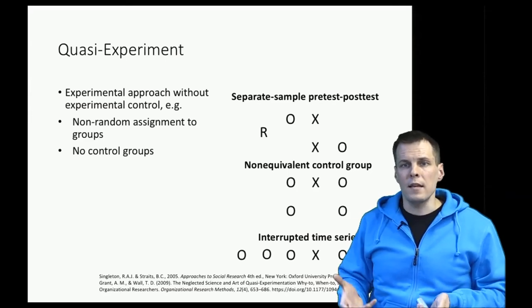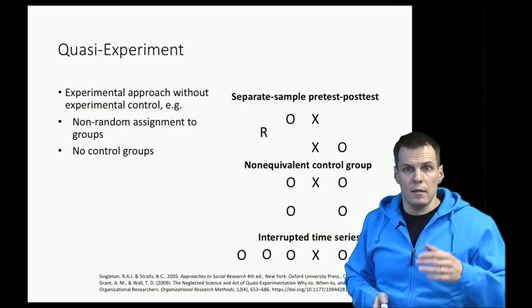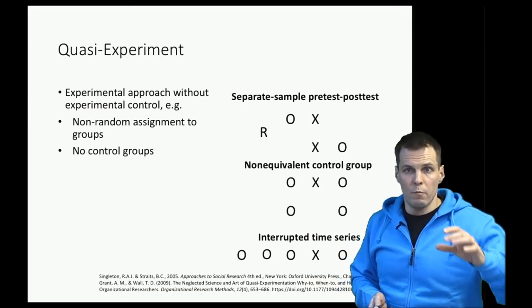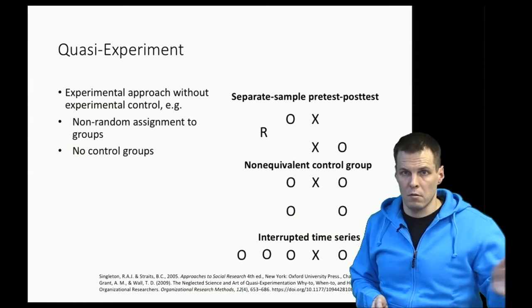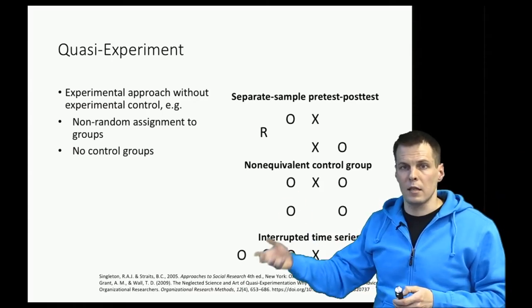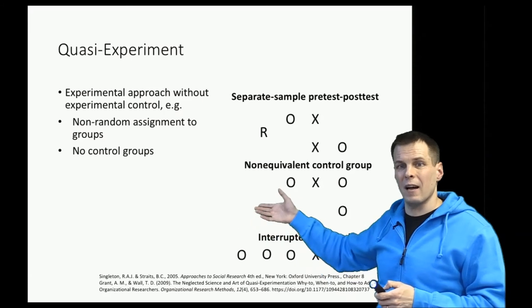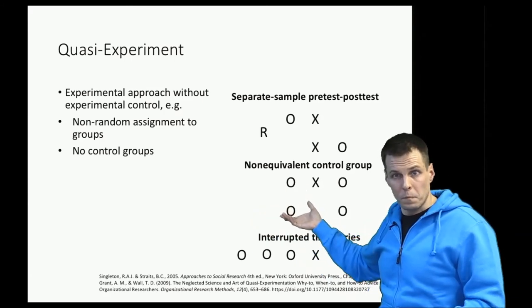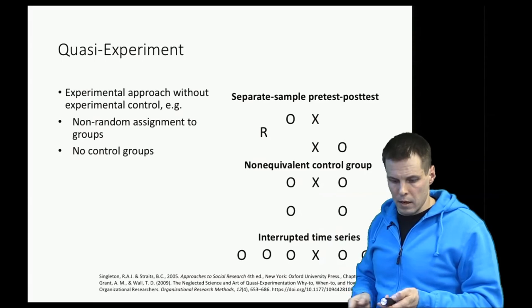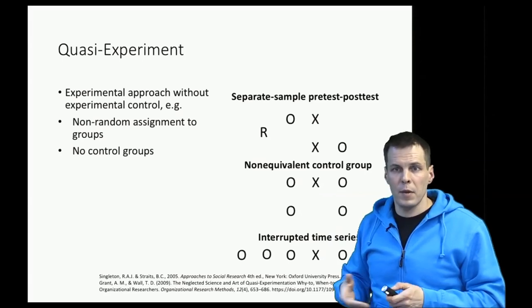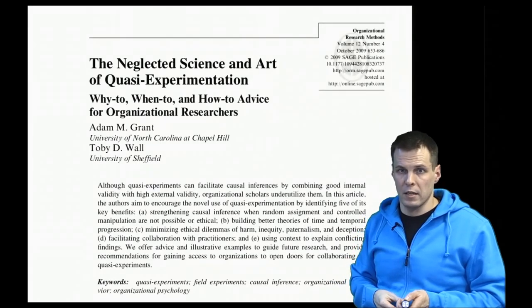So the idea of quasi-experimental design is that we have a treatment but we don't have the full randomization. So something happens, something is manipulated, but we don't really have quite a full experimental design. Quasi-experiments are something that people overlook when they think about their designs.